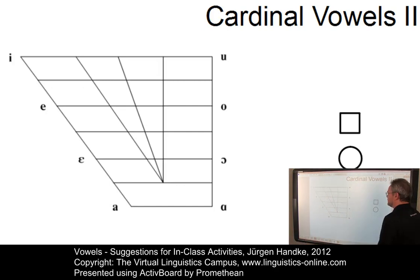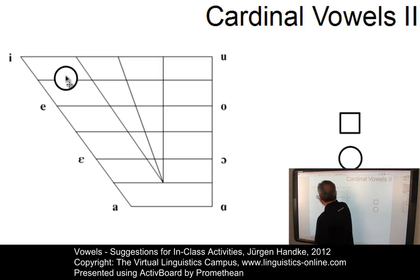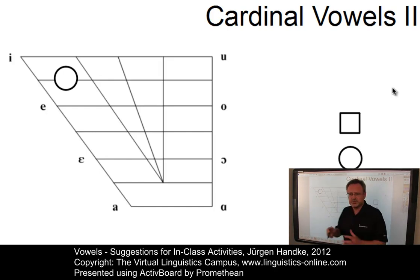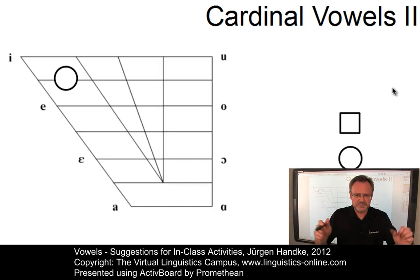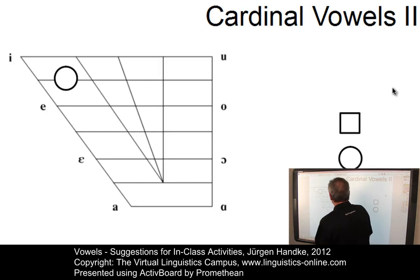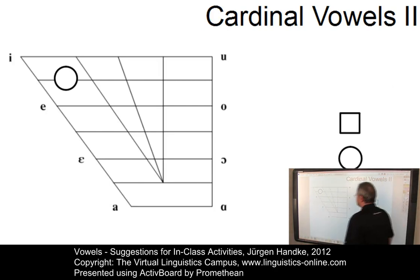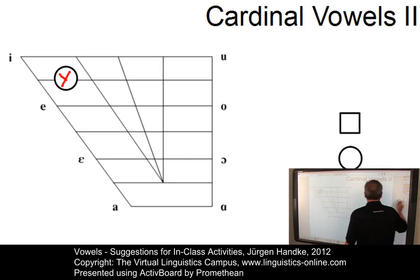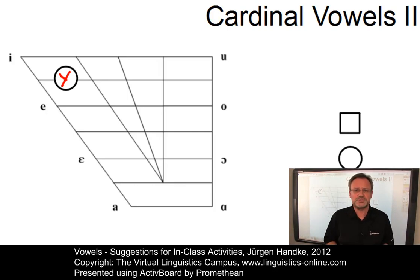For example, you could ask your student what type of vowel this one is. You explain to them that we use squares to indicate vowels produced with spread lips and circles for vowels produced with rounded lips. So this would be a rounded high front vowel. The symbol that we could use here is this one, and hopefully your students are in a position to produce this vowel — they would come up with 'ü'.